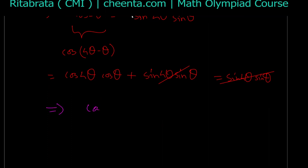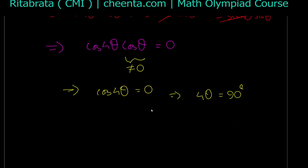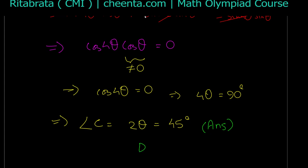Now cos(θ) is not zero because θ is not 90°, so we must have cos(4θ) = 0. This gives 4θ = 90°, so θ = 22.5°. Therefore angle C = 2θ = 45°. This is the answer, and this ends the solution.